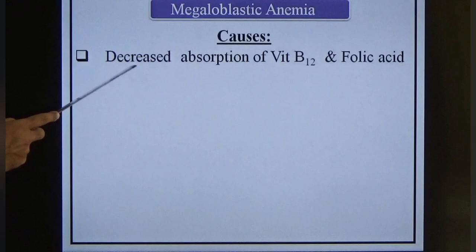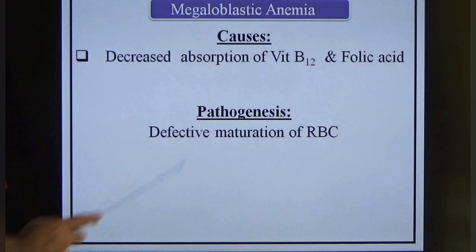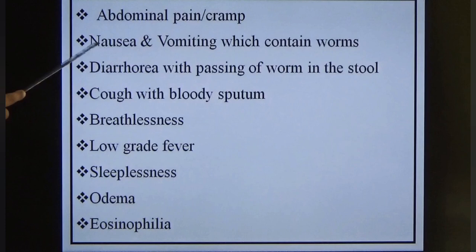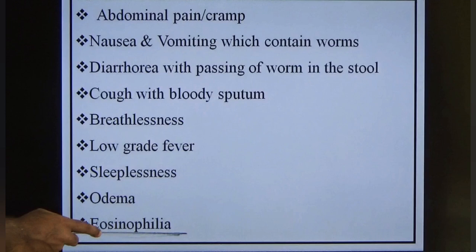Megaloblastic anemia results from decreased absorption of vitamin B12 and folic acid, leading to defective maturation of RBCs — all RBCs become larger, producing macrocytic hypochromic anemia. Common clinical features include abdominal pain, nausea and vomiting, diarrhea with passage of worms in stool, cough with bloody sputum, breathlessness, low-grade fever, sleeplessness, edema, and eosinophilia.